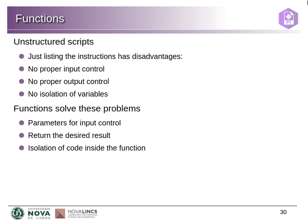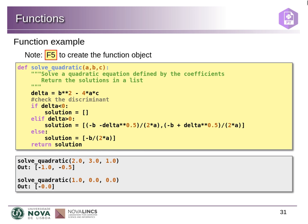Functions control the input by specifying parameters that receive values, control the output by specifying what comes out, and isolate the code so all variable names inside the function only exist inside it — if there are things with the same names outside they don't collide. In Python, a function is also an object and we create it using the 'def' statement, followed by the name of the function, then parentheses. If the function does not receive any values you just put empty parentheses; if it needs to receive values you provide the names of the local variables — the parameters — where the values will be stored.